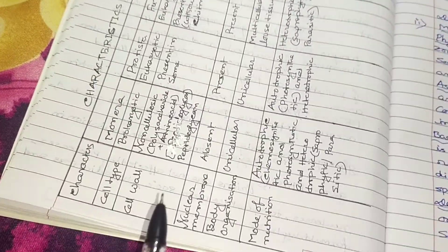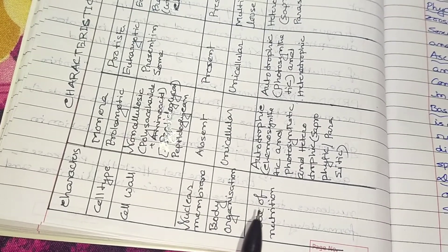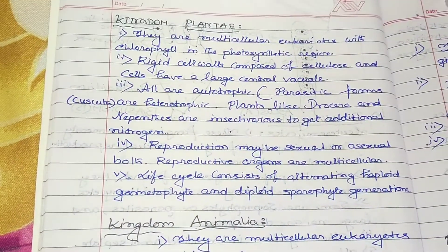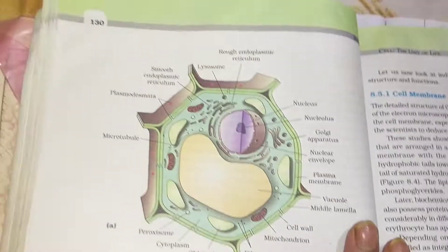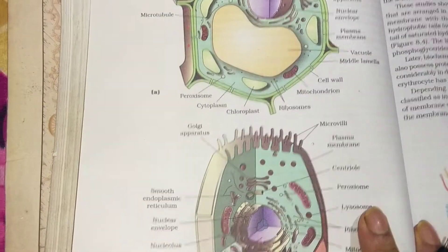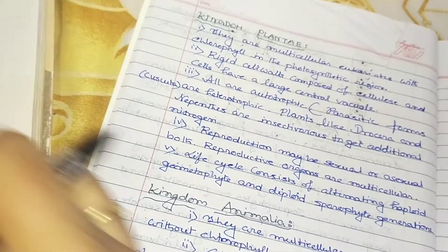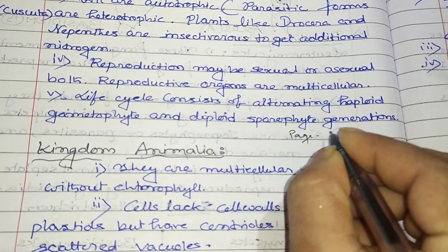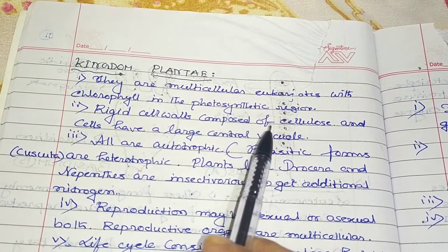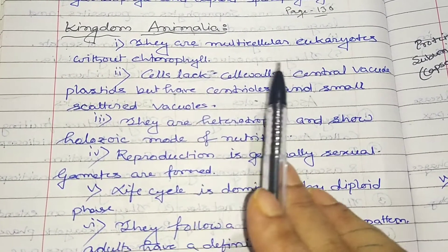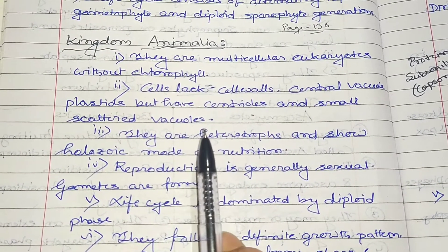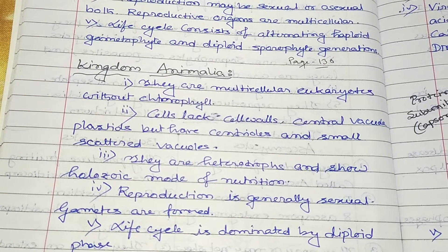The five-kingdom classification criteria include cell type, cell wall, nuclear membrane, body organization, and mode of nutrition. For reference, the plant cell and animal cell structures are given on page 130 of your textbook. Key points: plant cells have cellulose cell walls and a large central vacuole; animal cells lack cell walls and large vacuoles but have small scattered vacuoles.